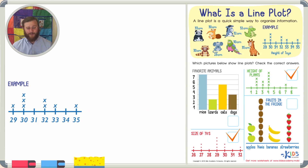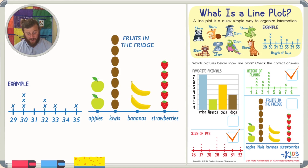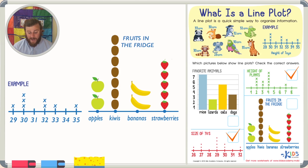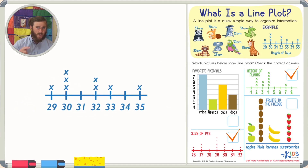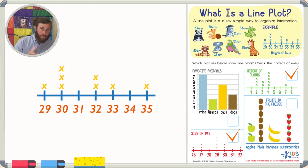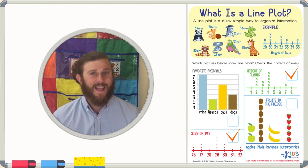Our final picture is really awesome, but it is not a line plot — this is a picture graph. I can see pictures of apples, kiwis, bananas, and strawberries. There are also no numbers on the bottom; we have the names of the fruits instead. Remember: when looking for a line plot, look for the numbers on the bottom and the X's or dots above them, where each X or dot represents just one item.